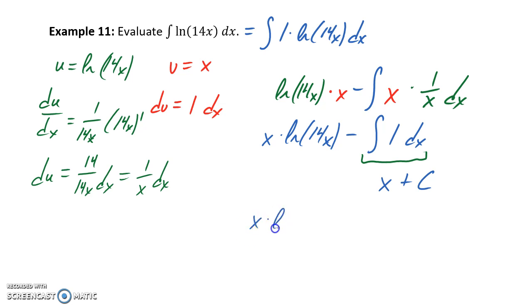So our final answer here would be x times the natural log of 14x, minus x, plus some quantity c.